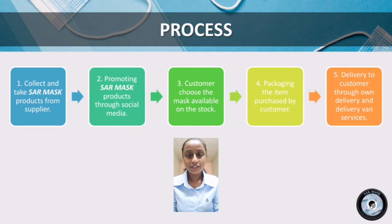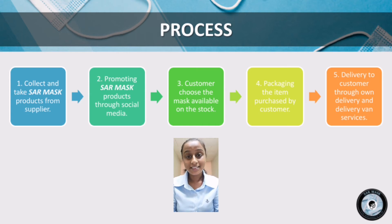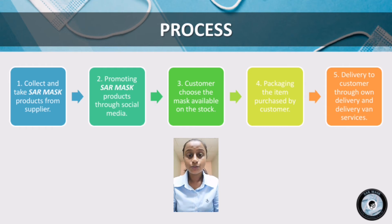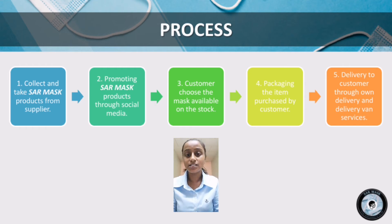Hi everyone, my name is Jivitra Rajkumar and my metric number is A21B3254. I am going to present on the process of the business plan for Sarmas. First, we collect and take Sarmas products from our supplier, which is the well-known online business platform Shopee, choosing from our local area supplier. Next, we promote Sarmas products through social media — we have created official accounts on Instagram and Facebook, and also promote through our WhatsApp status.